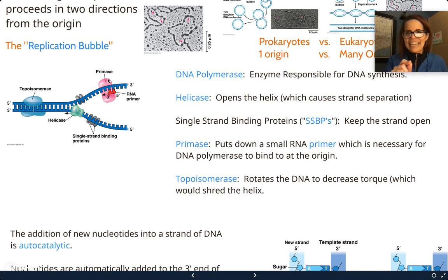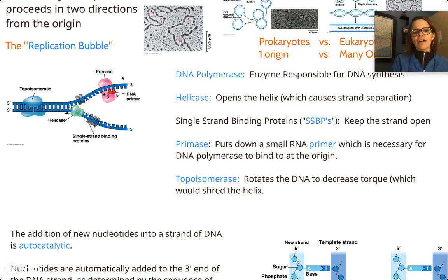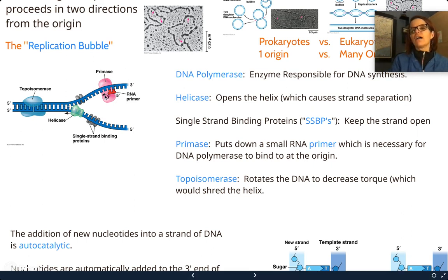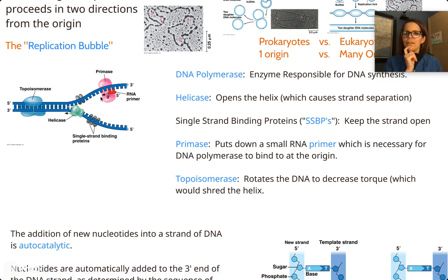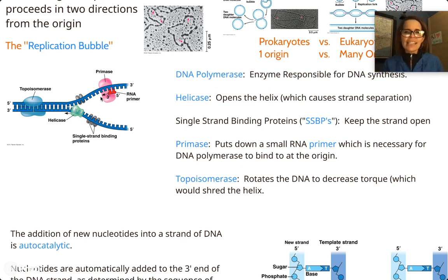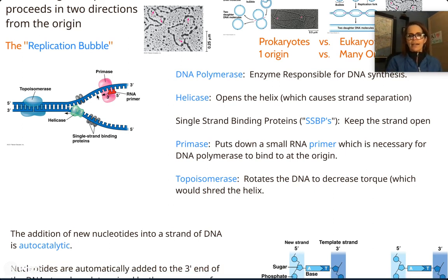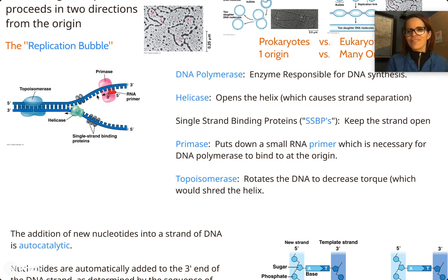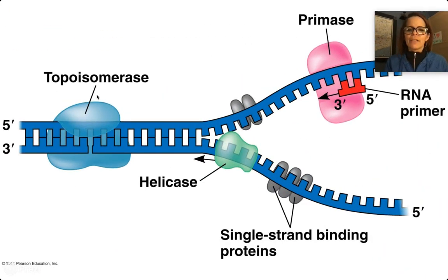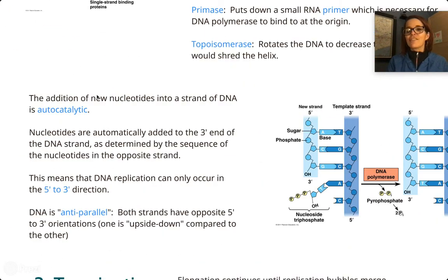The first enzyme that really takes action is called primase. It lays down the first section of A's, U's, C's, and G's — called an RNA primer — and it's basically telling the DNA polymerase where to start. DNA polymerase starts after this RNA primer. That process — topoisomerase untwisting, helicase unzipping, primase laying the primer — is called initiation. This is the beginning of replication.